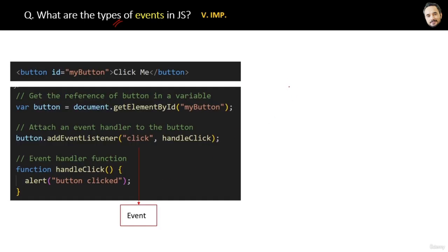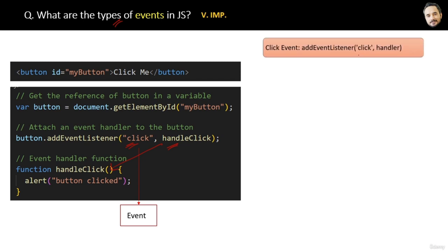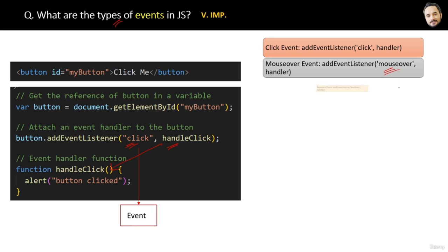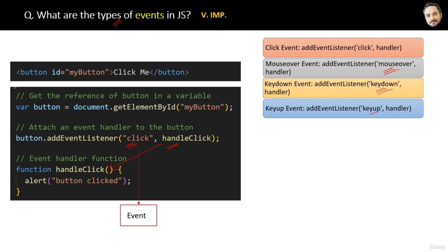What are the types of events in JavaScript? Similar to click events, we have many other types. Here 'click' is the event name and handleClick is the event handler. Similarly, when you hover the mouse over an element we have a mouseover event. When you press a key down on your keyboard we have a keydown event, and for the key up we have the keyup event. If you press enter, the submit event will be fired.